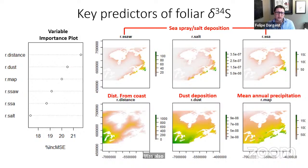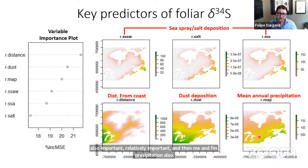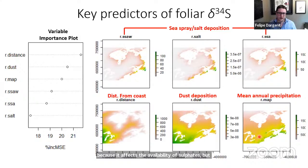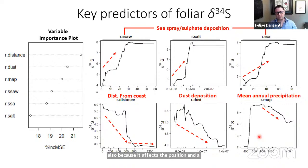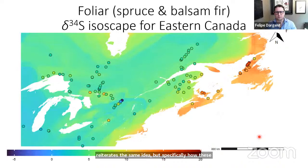More interestingly, dust aerosol deposition — mineral dust generated in arid places and transported by atmospheric circulation in a north-south gradient — was also relatively important. Mean annual precipitation also played a role, because it affects the availability of sulfates and also affects deposition and fractionation.